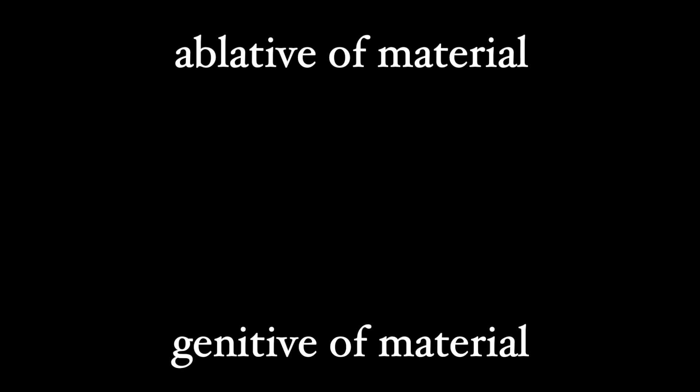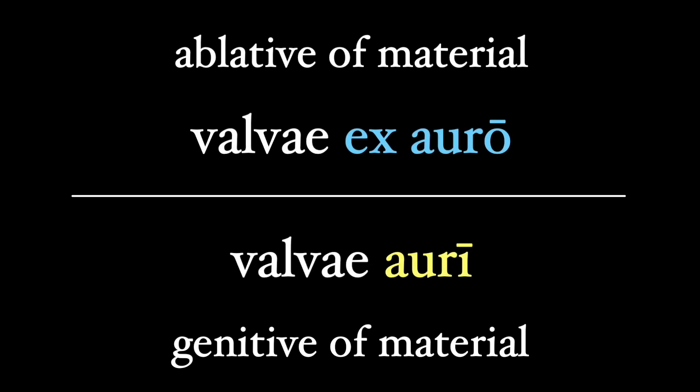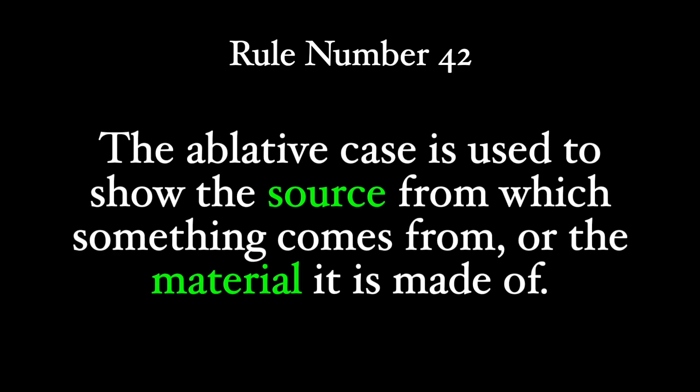There is a genitive of material that's pretty similar in meaning to the ablative of material — Rule number 17, by the way. So 'doors of gold' can be both valvae ex auro using the ablative, and valvae auri using the genitive. The difference? Yeah, not much. That's rule number 42: the ablative case is used to show the source from which something comes from, or the material it's made of.